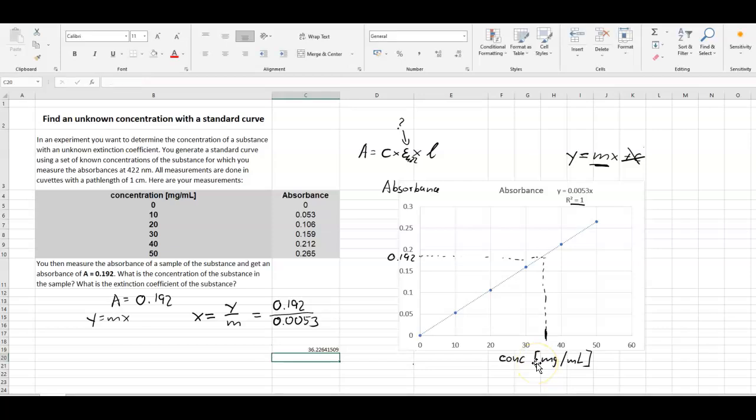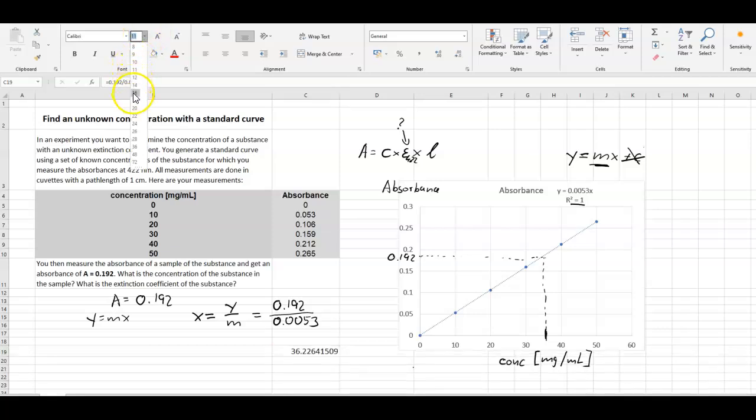And we just simply put that into Excel. We don't need to calculate it ourselves. Let me make this larger. So we would just simply say equals 0.192 divided by the gradient. And that was 0.0053. And we would get a value of around 36. We probably need to be careful with the number of digits after the decimal point. I don't think we can be more precise than this 36. And what's the unit? Well, the unit is, of course, this milligram per milliliter.